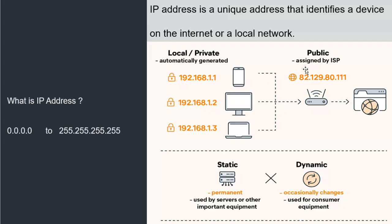IP addresses are of two types: one is static and another is dynamic. Dynamic means every time we reboot or reset the system, the IP address keeps changing — that is called a dynamic IP address. But a static IP address is always constant; today, tomorrow, and the day after it will always be the same for that particular device. That is called a permanent IP address.